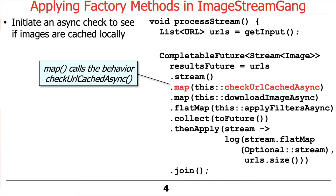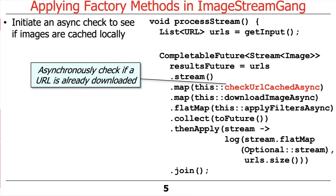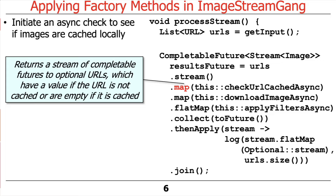That's going to happen here at this point in the overall flow. We've got our list of URLs, we convert that into a stream, and then we're going to use the map intermediate operation to asynchronously check to see if the URLs are already cached. The checkURLCachedAsync behavior will asynchronously check to see if a URL is already downloaded. It returns a stream of completable futures to optional URLs, which will have a value present if the URL is not cached, and will be empty if the URL is already cached.